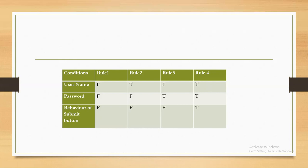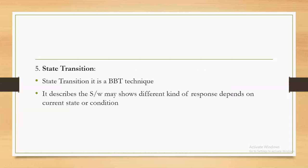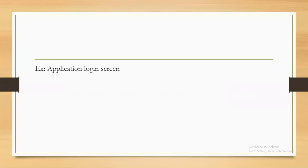State transition testing is also a blackboard testing technique. It describes how the software shows a different kind of response depending on the current state or condition. Like a human — you are not always going to respond the same way; based on the situation, you respond differently. Similarly, an application can show a different kind of response depending on its current state or condition. Let us consider an example: the application login screen.